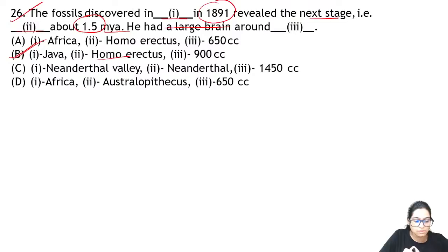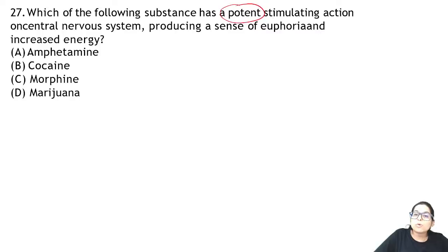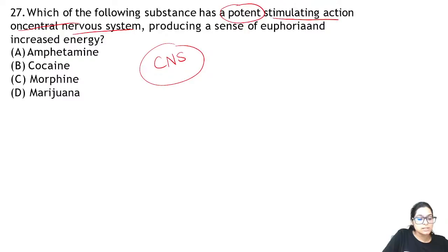Zoology Question 27: which of the following has a potent stimulating action on the central nervous system — it causes euphoria and increases energy. The answer is cocaine.